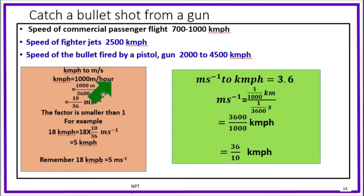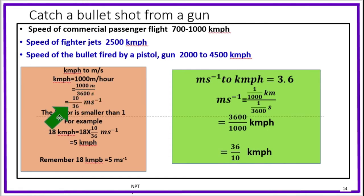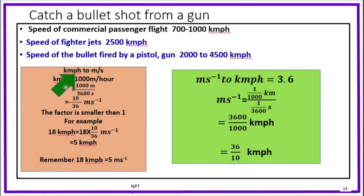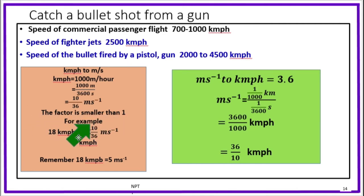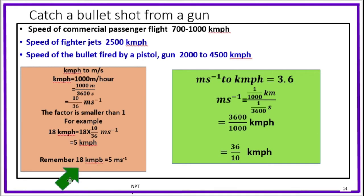To convert km per hour to meter per second: 1000 m per hour equals 1000 m divided by 3600 seconds, which equals 10 by 36 m per second. So km per hour multiplied by 10/36 gives m per second. The factor is less than 1. For example, 18 km per hour equals 5 m per second. Remember: 18 km per hour is 5 m per second.